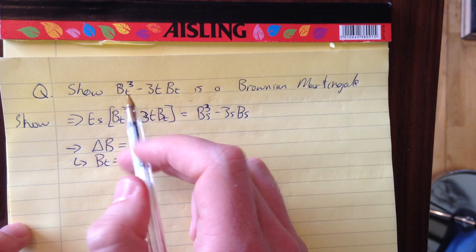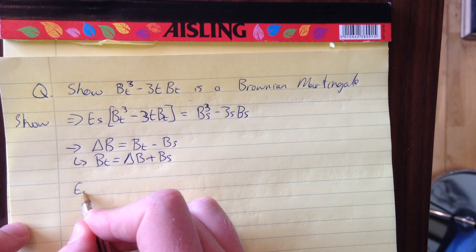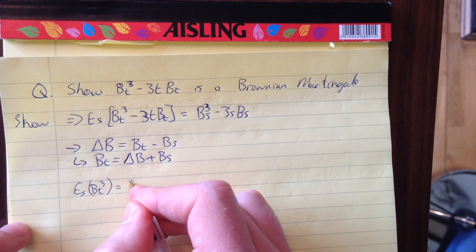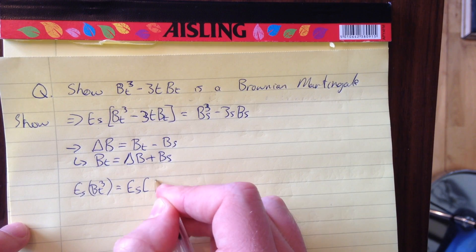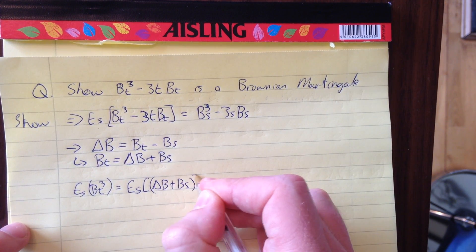First I'll do B_t^3, substituting in this equation. We have the expected value of (delta B + B_s)^3.